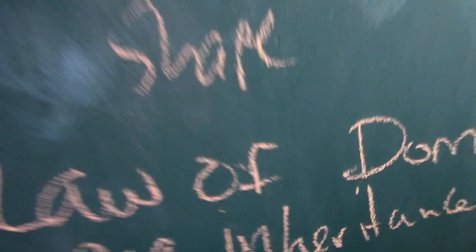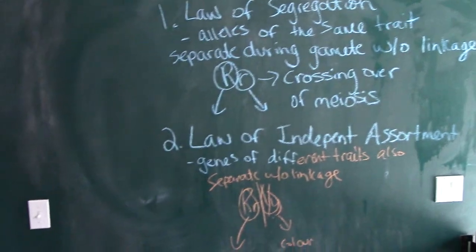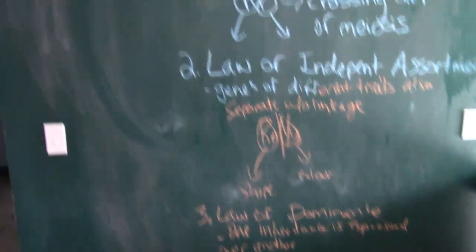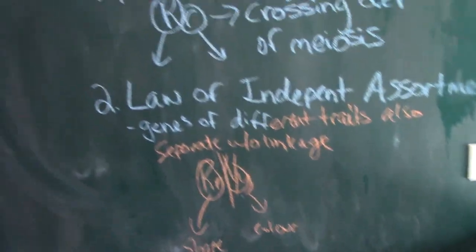Mendel's third law is the Law of Dominance, which tells us that one inheritance factor is expressed completely over another. That's how we get homozygous dominant, heterozygous, and homozygous recessive traits — one allele expressed over another. I'm going to expand on this with codominance and incomplete dominance, where we have special cases with multiple dominant traits. The original point is true; we've just learned more about it over time.